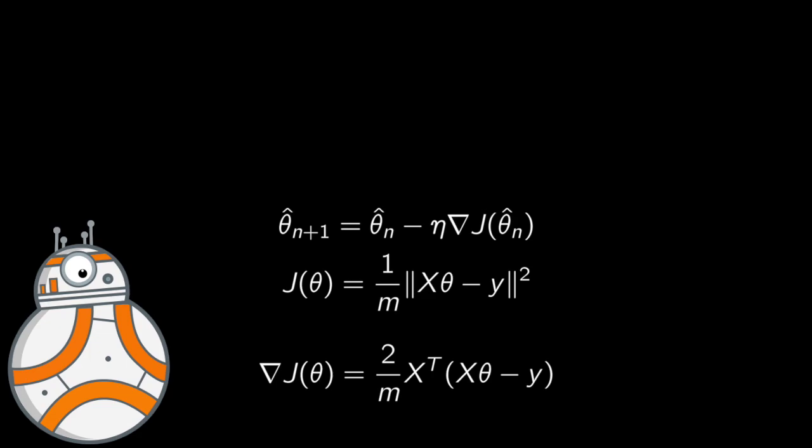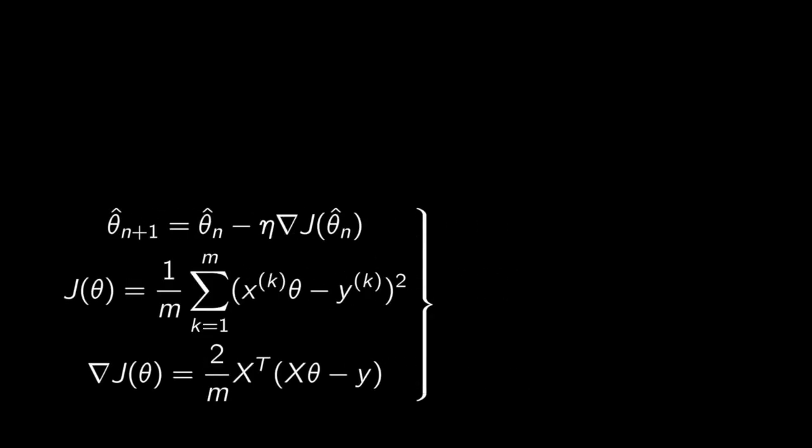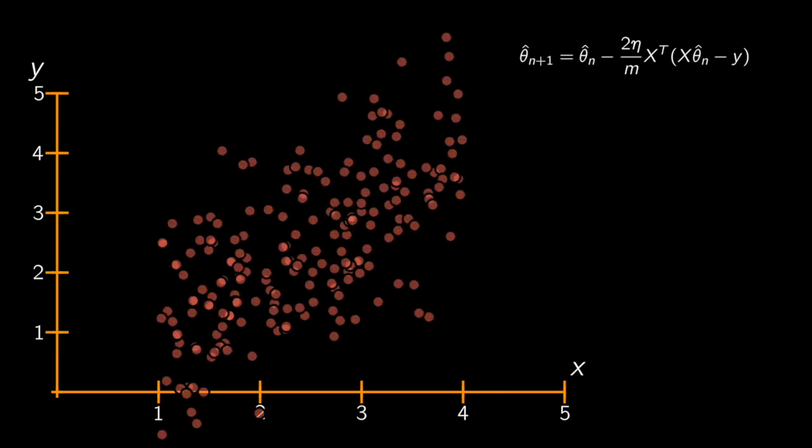Well then we just replace the nabla of J of theta, or the gradient of J of theta, in the expression of gradient descent and we get this iterative procedure that we have. Let's see how this performs on some data, right? So ideally I'd want to hit the blue line as fast as possible.